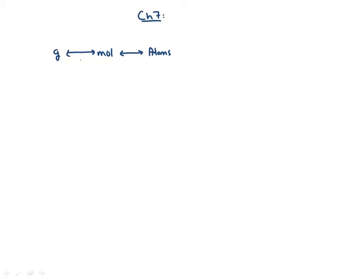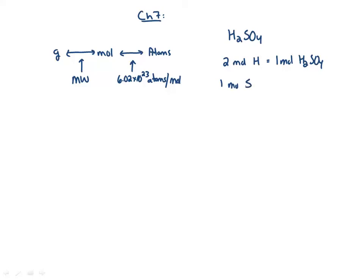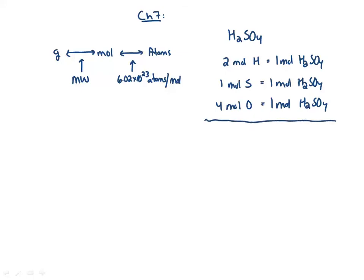What is the conversion factor between grams and moles? Molecular weight. And what's the conversion factor between moles and atoms? Avogadro's number — atoms or anything else per mole. The other thing we talked about is if I have a formula like H2SO4, we can say there are two moles of hydrogen in one mole of H2SO4, one mole of sulfur in one mole of H2SO4, and four moles of oxygen in one mole of H2SO4. We could take apart an actual chemical compound, and we could say the same thing in terms of atoms — two atoms of hydrogen in one molecule of H2SO4.